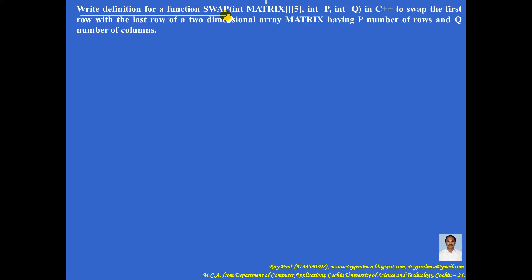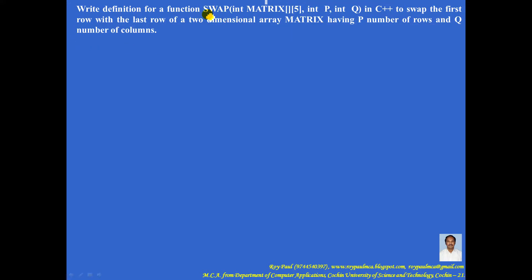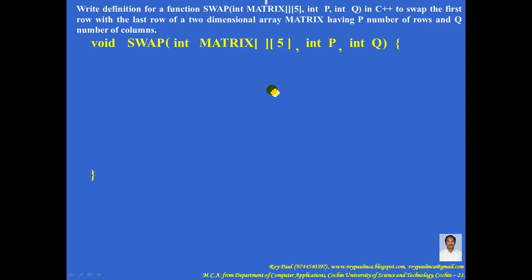Write the definition for a function swap in C++ to swap the first row with the last row of a two-dimensional array whose name is matrix, having p number of rows and q number of columns. The prototype of the function is given. To derive the body of the function, let me take an example.